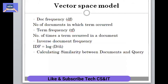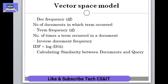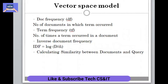Let's talk about the vector space model. The vector space model is basically an algebraic model used for the representation of text documents as vectors of identifiers. Its main uses are in information filtering, information retrieval, indexing, and relevancy ranking.